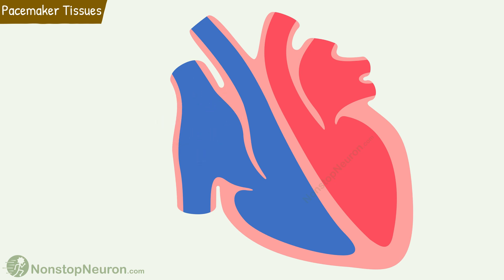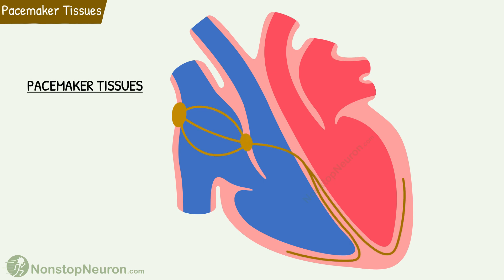The heart generates impulses on its own to trigger a heartbeat. For this, the heart has three pacemaker tissues: the SA node, the AV node, and the Purkinje fibers. They all can generate impulses on their own. However, the rate of impulse generation is different.